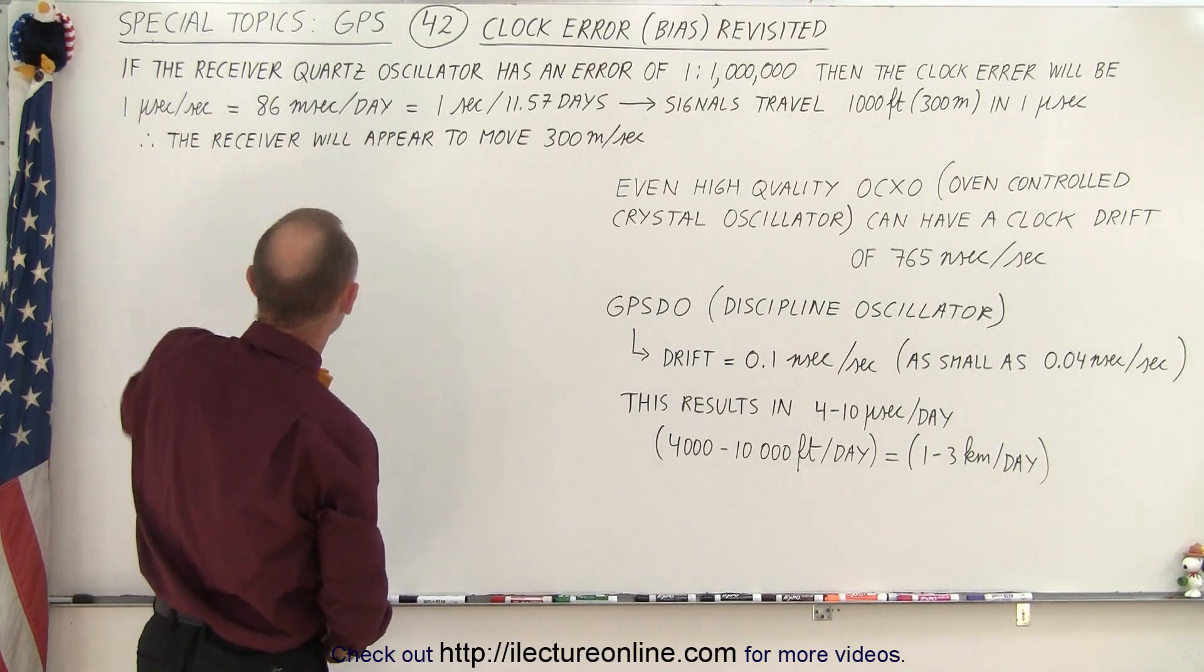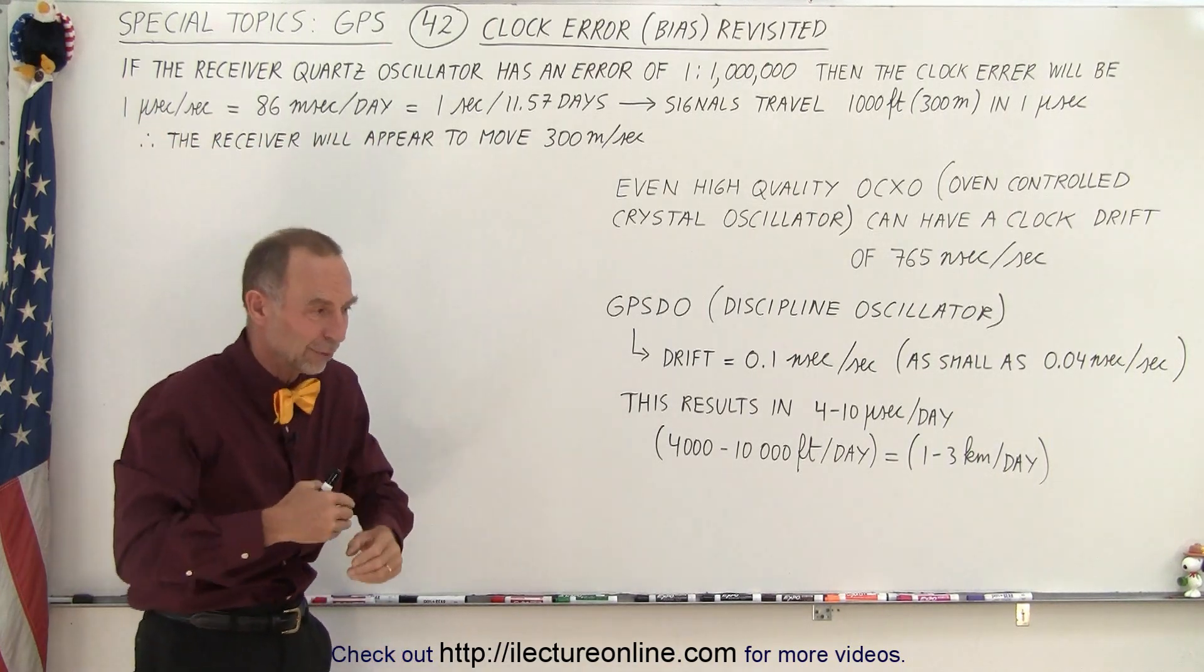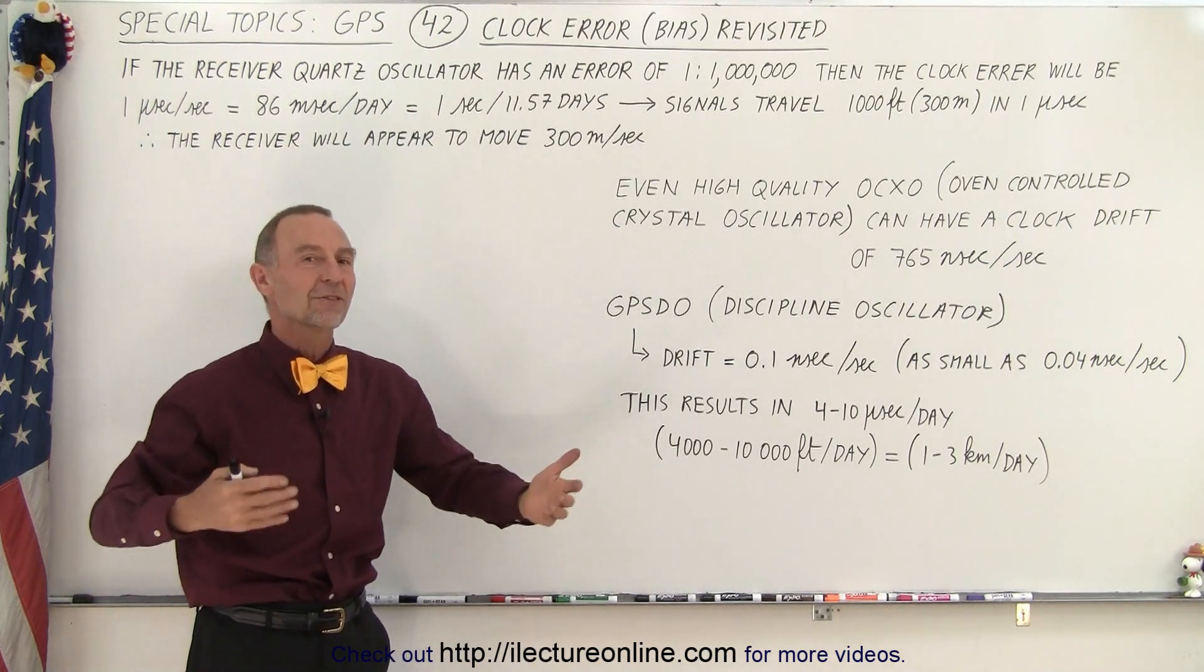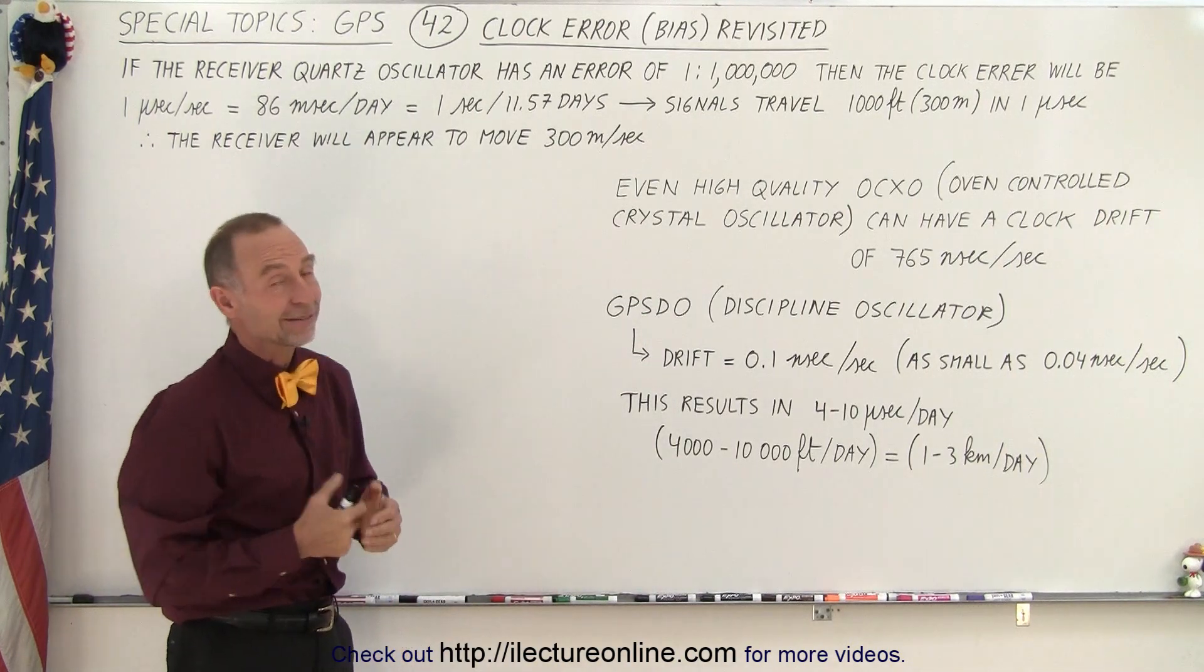So the receiver will appear to move 300 meters every second, because it's going to be out by one microsecond per second. And so your receiver will be zipping along, apparently, at half the speed of a jetliner. Of course, that's not very good.